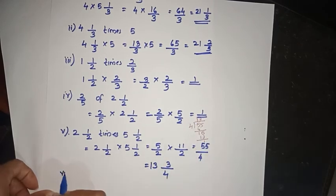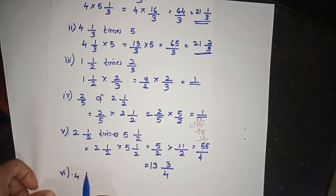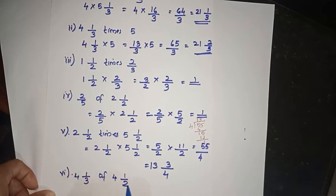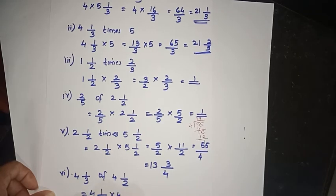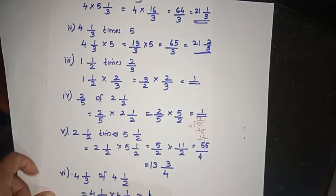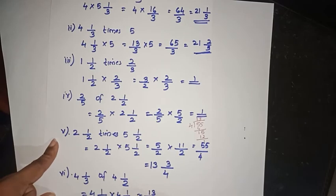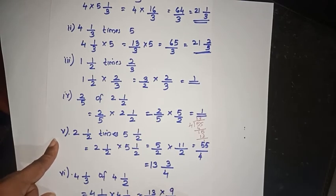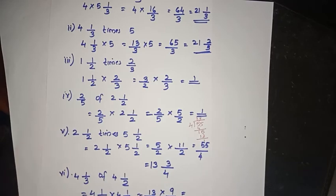Next is the 6th and last question: 4 and 1 by 3 of 4 and 1 by 2. We need to simplify. 4 and 1 by 3 becomes 13 by 3, into 9 by 2.